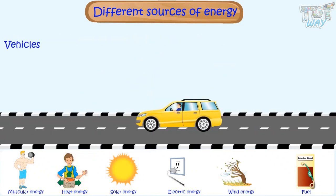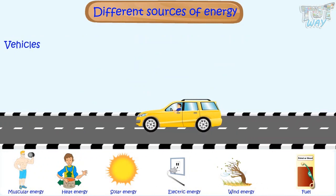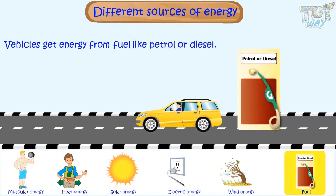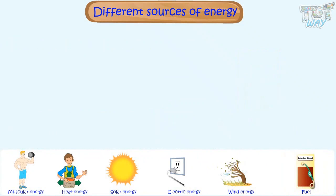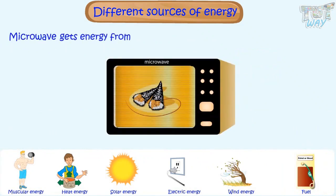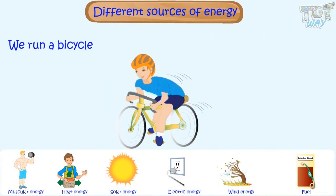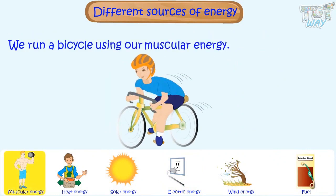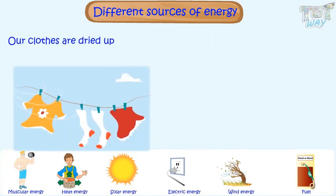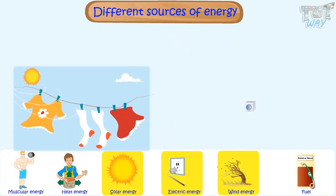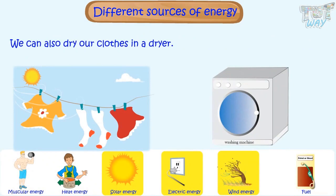Vehicles like cars and bikes get energy from fuel like petrol or diesel. Microwaves get energy from electricity to cook and heat food. We run a bicycle using our muscular energy.